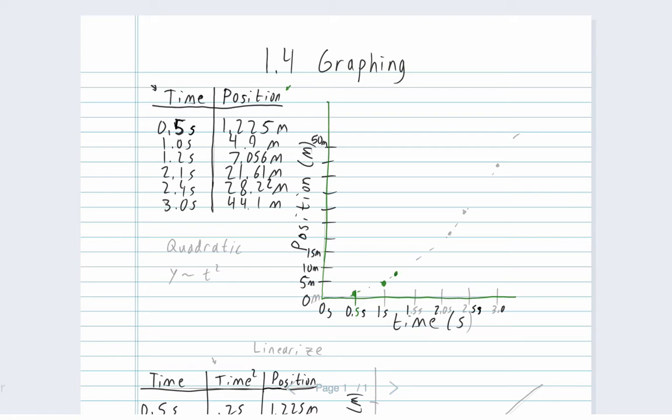And then at 2.1 seconds we're at 21.61 so that's about right there. Now my distance isn't perfect between these guys but hopefully it's close. 2.4 seconds we're at 28.22 so that would be about there. And then at 3.0 seconds we're at 44.1 which is about there.